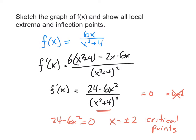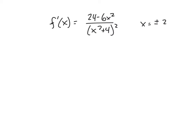Because finding the second derivative is going to be such a hassle, I'll do a sign diagram on the first derivative to see what's going on and locate the extreme values that way rather than using the second derivative test. With critical points at plus or minus 2, I'll choose representative points: negative 3, 0, and 3, and plug each into f prime. Since the denominator is always positive, we only need to check the sign of the numerator.